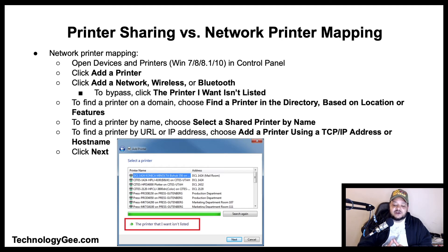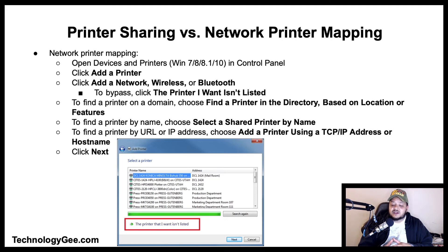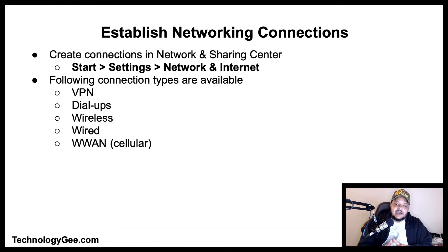To perform network printer mapping, open Devices and Printers in Windows 7, 8, 8.1, and 10 from the Control Panel. Click Add a Printer, then click Add a network, wireless, or Bluetooth printer — Windows will search for a printer automatically. To bypass this, click 'The printer I want isn't listed.' To find a printer on a domain-based network, choose 'Find a printer in the directory based on location or features.' To find a printer by name, choose 'Select a shared printer by name.' To find a printer by URL or IP address, choose 'Add a printer using a TCP/IP address or hostname,' then click Next.